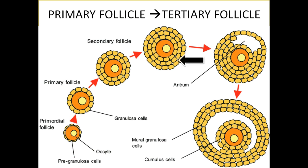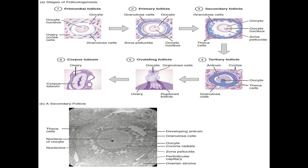The purpose of granulosa cells will be explained in the next lecture. A cavity begins to form, called the antrum. This cavity increases in size, indicating that the secondary follicle is now no longer secondary — it has become a tertiary follicle surrounding a secondary oocyte. Here is another very good depiction of the stages of follicular development.